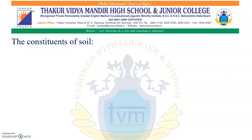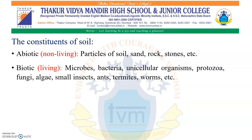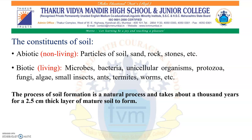The constituents of soil means what the soil is made up of. There are two constituents of soil. The non-living constituents of soil are called abiotic constituents — for example, particles of soil, sand, rock, stones, etc. The living constituents of soil are called biotic constituents — for example, microbes, bacteria, unicellular organisms, protozoa, fungi, algae, small insects, ants, termites, worms, etc. The process of soil formation is a natural process and takes about a thousand years for a 2.5 cm thick layer of mature soil to form.